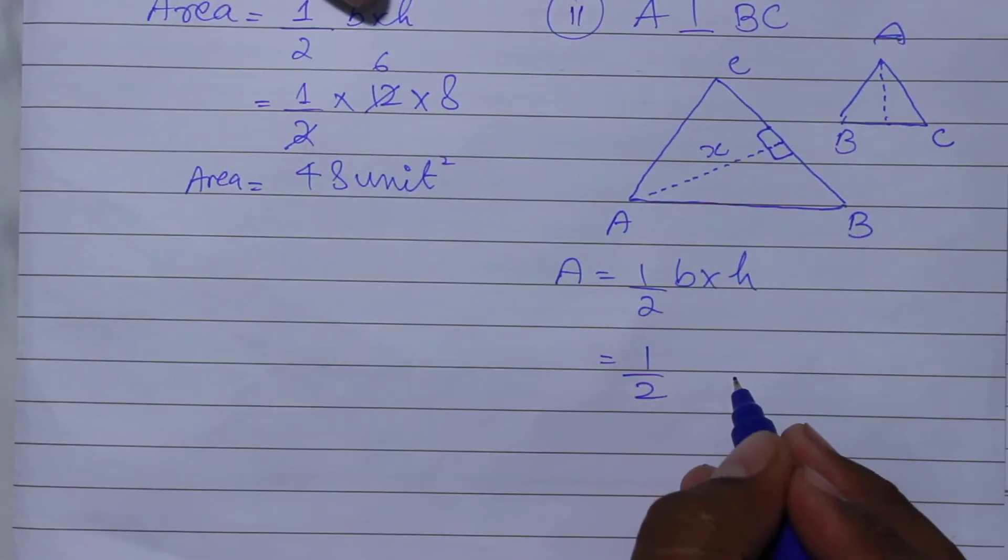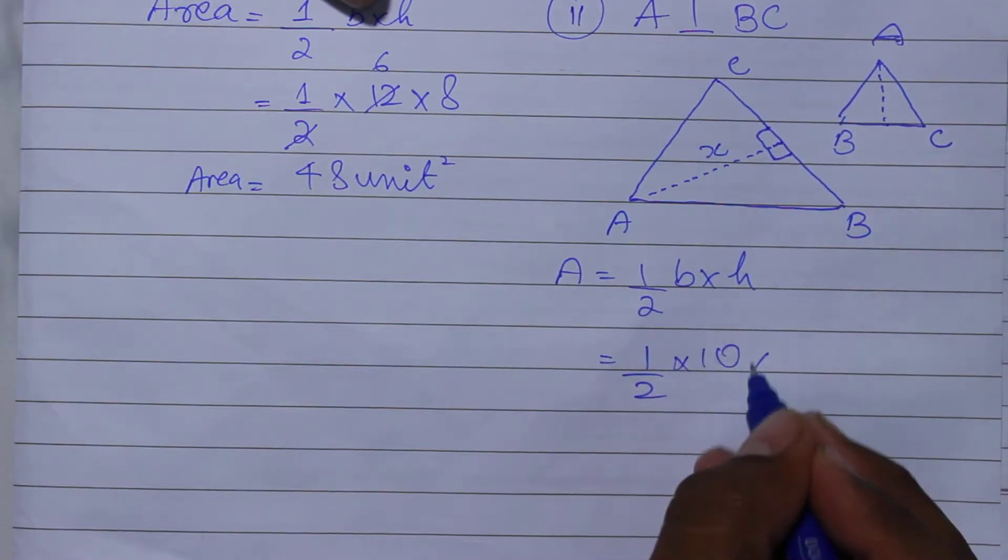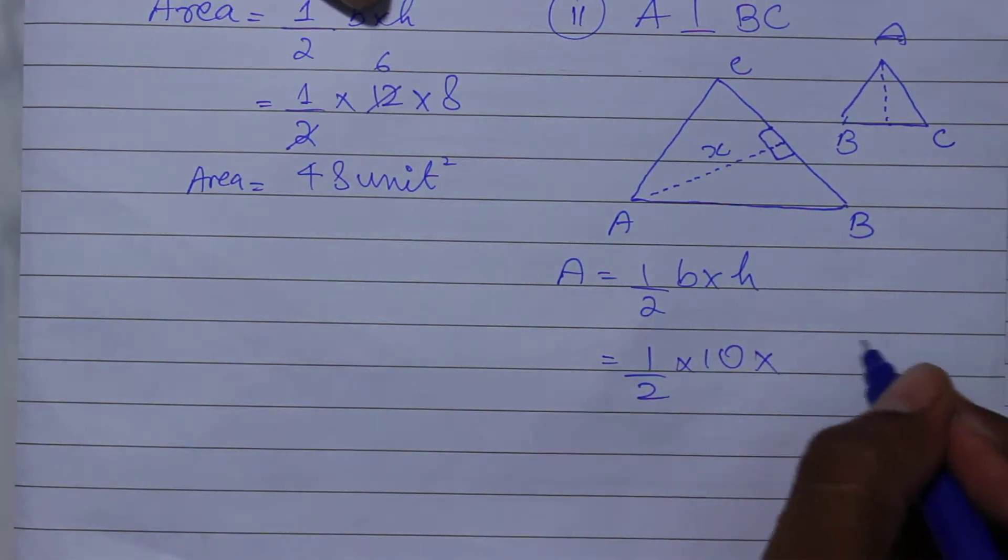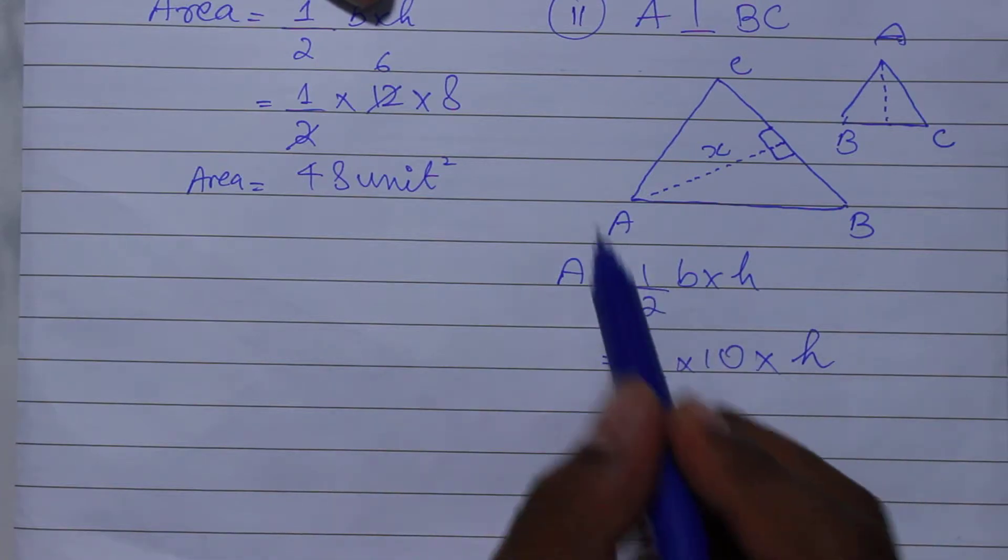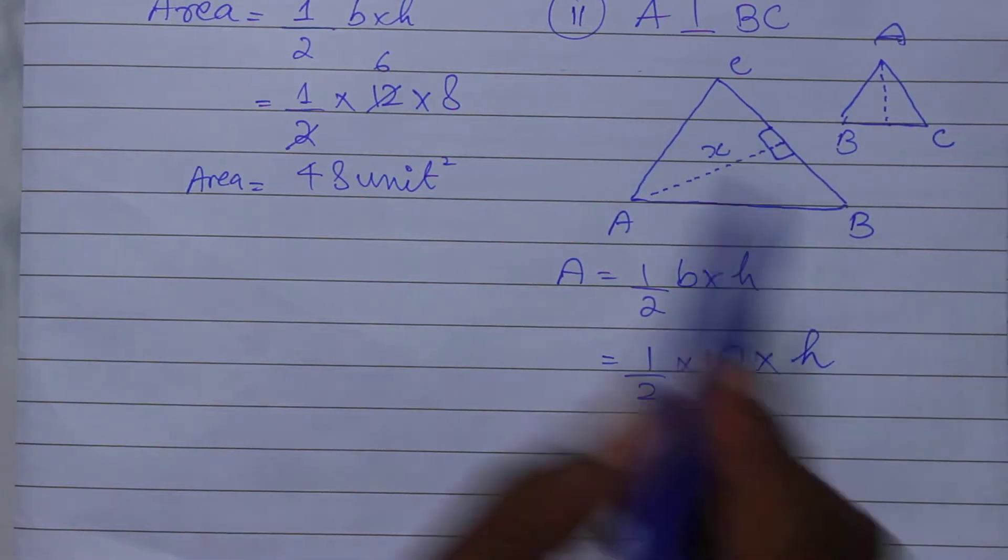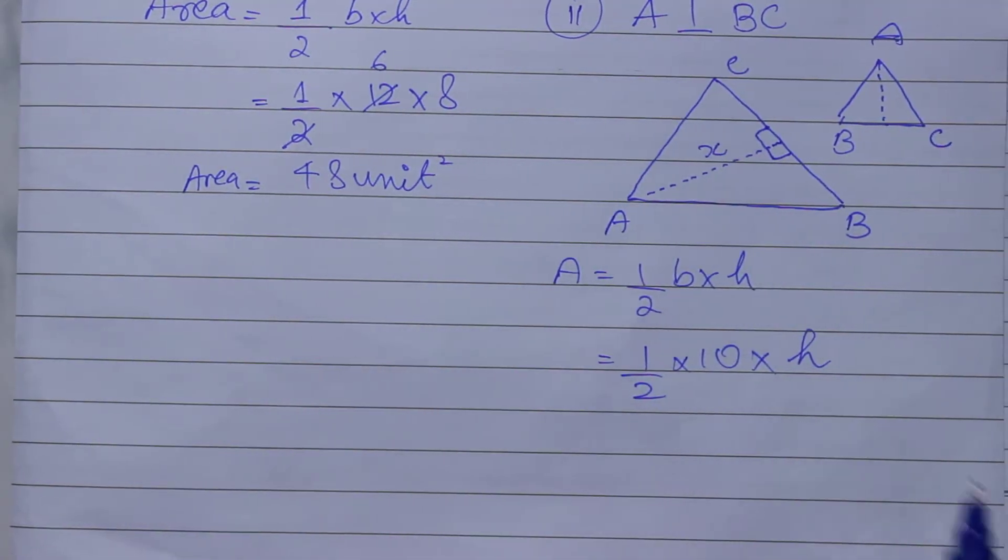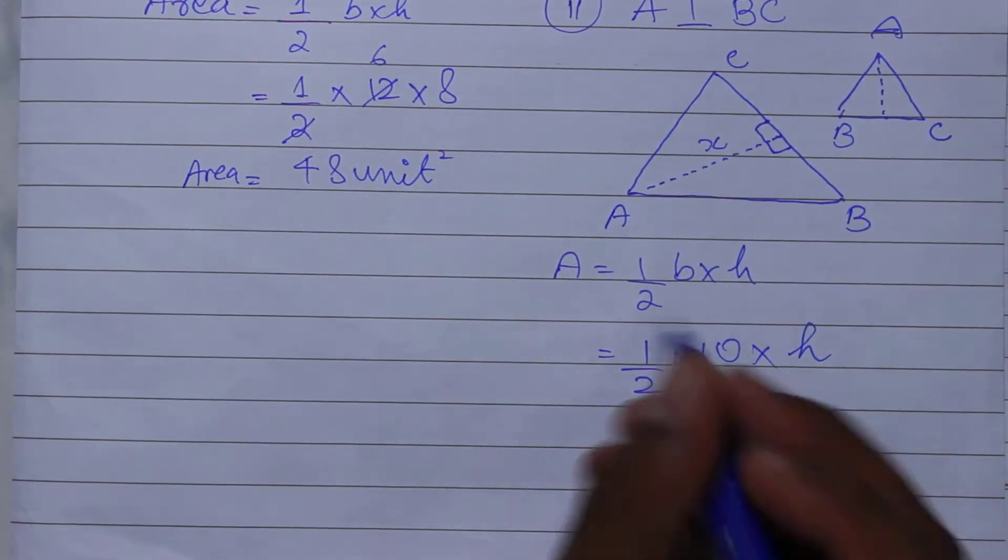1 upon 2, base which is my 10 unit, and height I have to know. This triangle area I have to know from the previous part 1, which is 48 unit square.